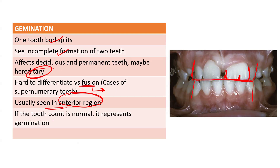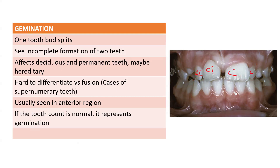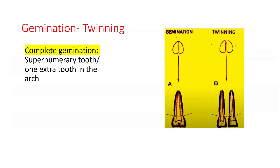If the tooth count is normal, it represents gemination. As you can see, you have your central incisor, lateral incisor, central incisor, lateral incisor, and canines — six teeth in the anterior segment. The tooth count is completely normal in gemination; it's just one tooth which is larger than it should be. In this diagram, there is one tooth germ trying to divide into two but there is incomplete division.